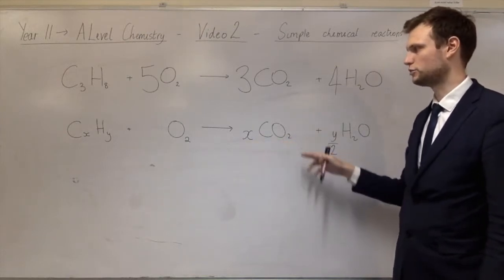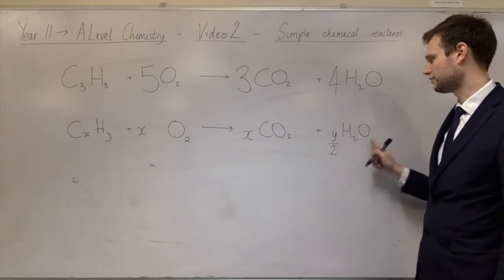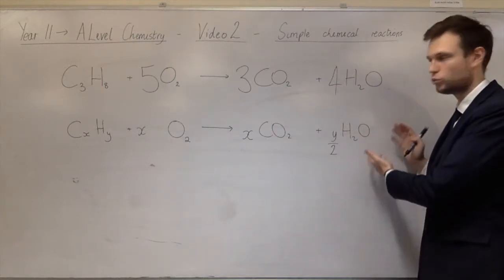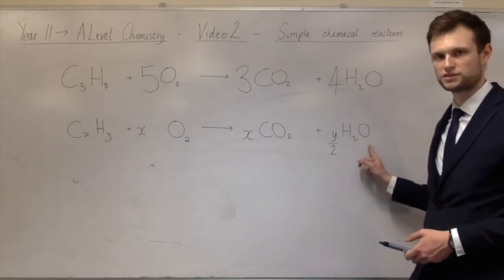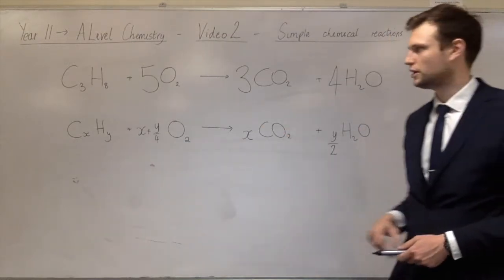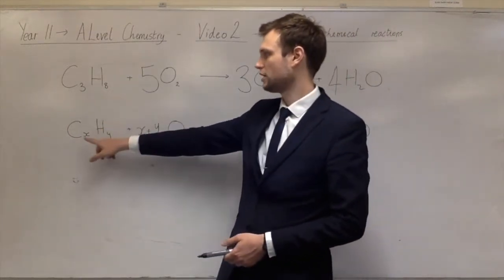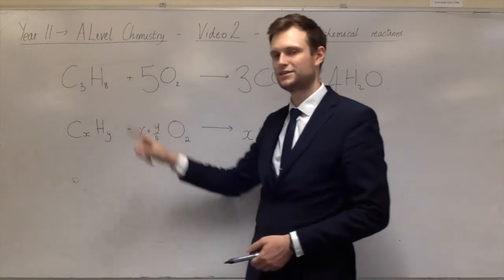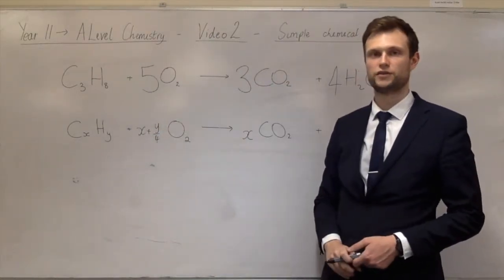Now to work out this last number. I did this. XCO2 would give me XO2. So X. And then half of this number. Because each water has 1. And over here I've got 2. So I need half the number of waters worth of oxygens. So half of y over 2 is y over 4. So if I just check that using the equation that we used above. X is 3 and y is 8. So 3 plus 8 over 4 is 5. So the answer there is 5.